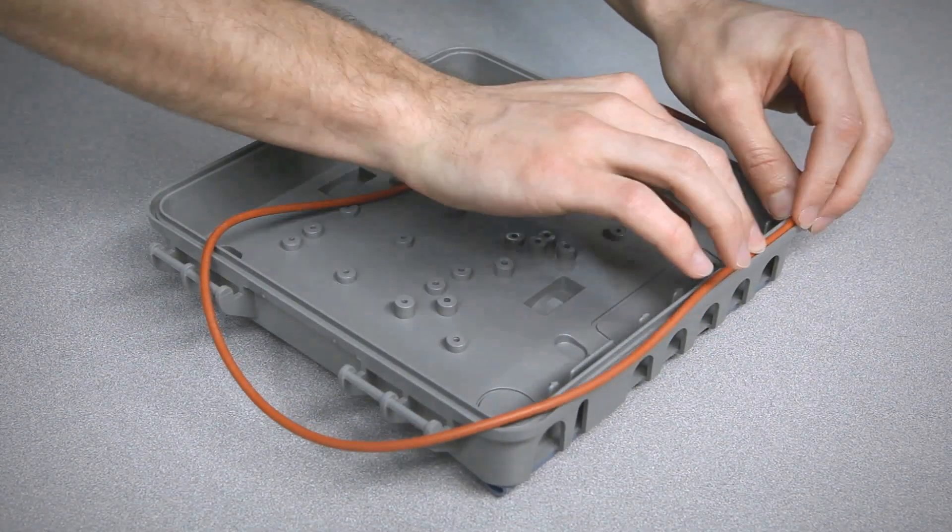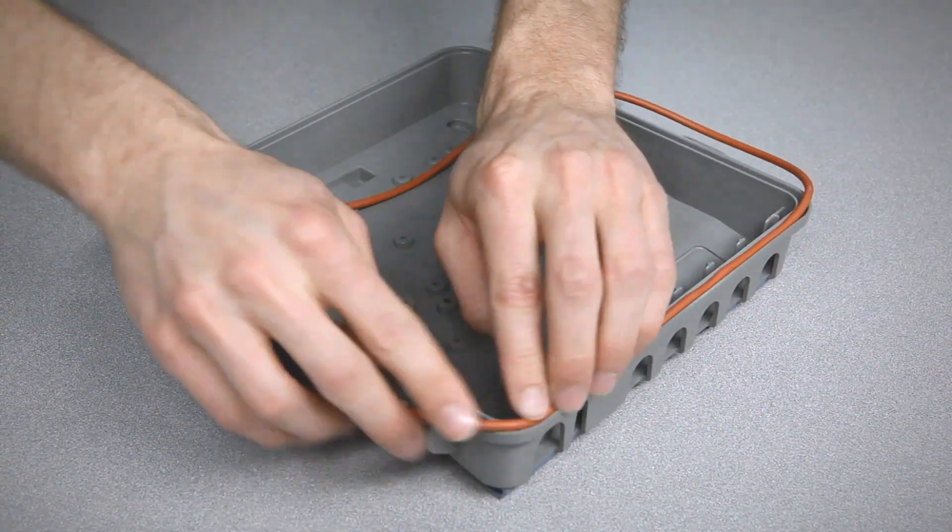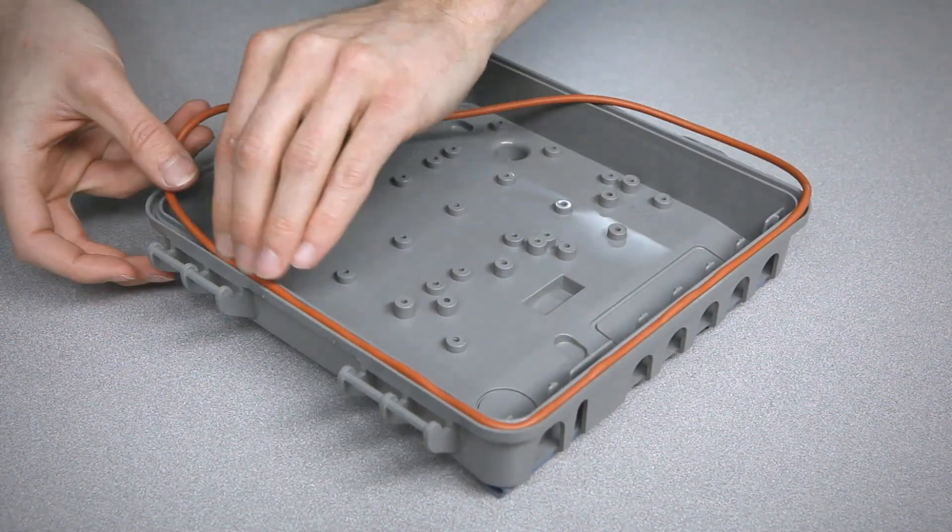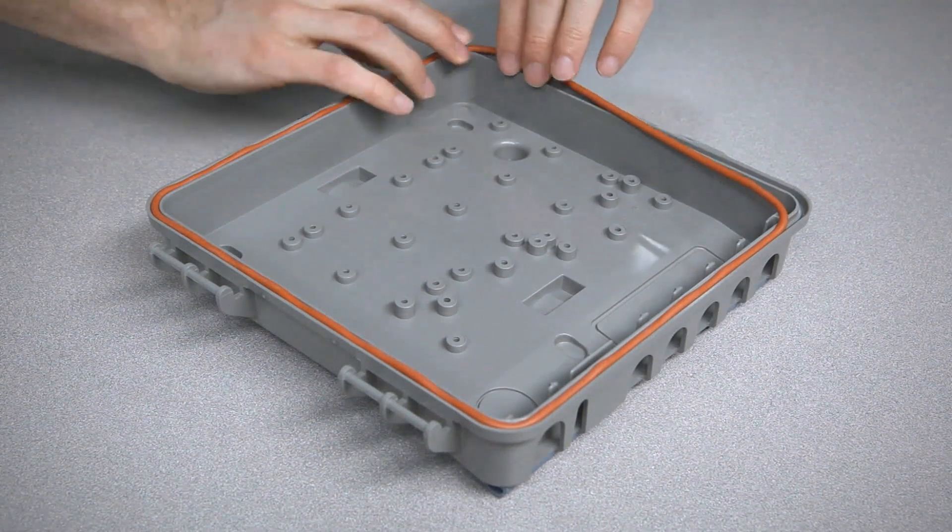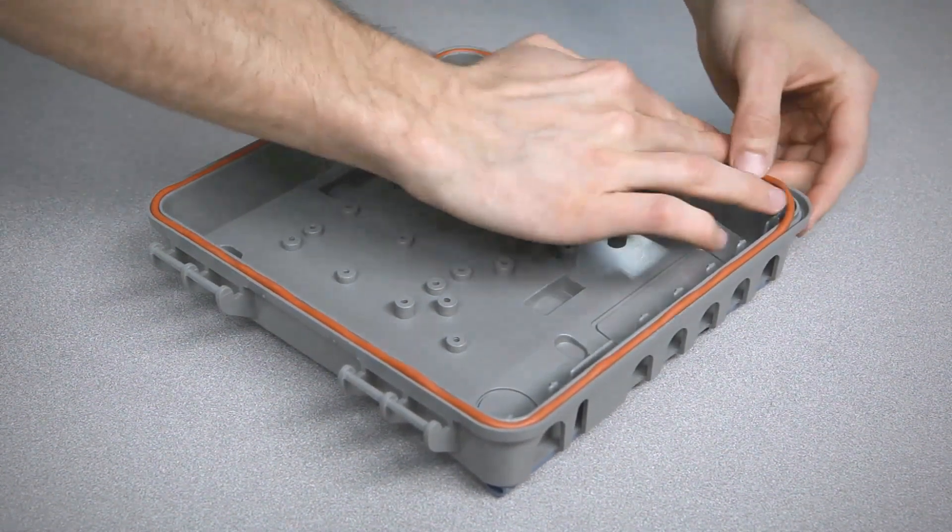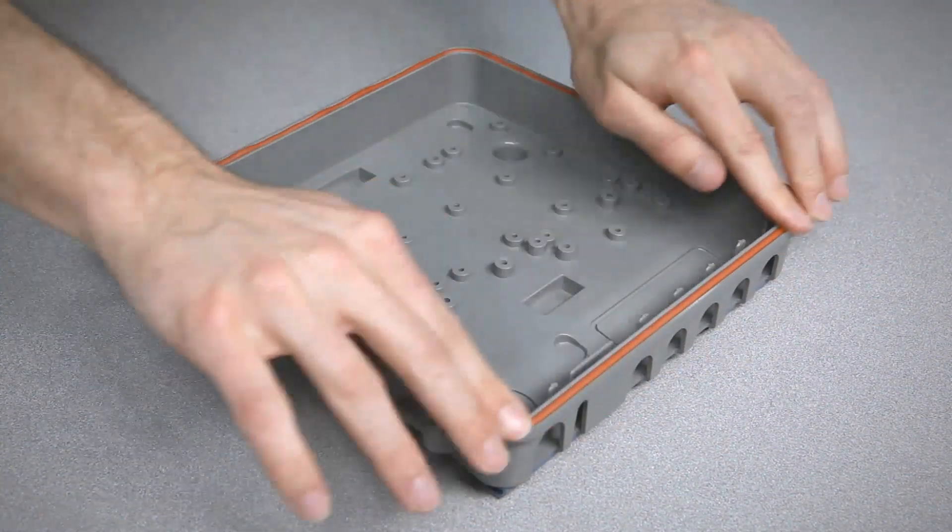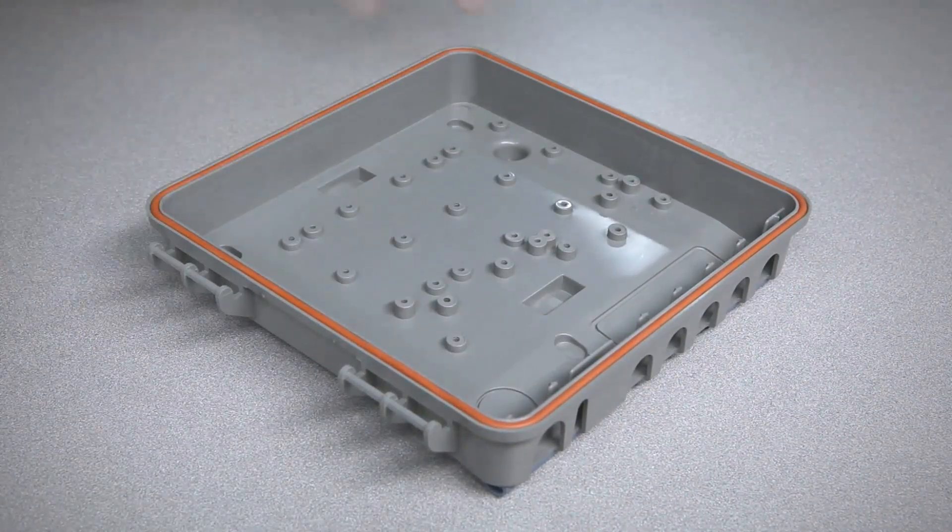To properly install the hollow O-rings, start at one point and work your way around the groove, pushing the seal into the groove. The friction fit feature enables the seal to remain inside the groove without the need for adhesive or mechanical fasteners.